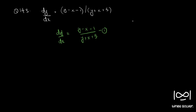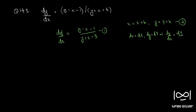The substitution we use here is: small x is equal to capital X plus h, and small y equal to capital Y plus k — let's call this equation 2. Differentiating equation 2 with respect to x, we have dX equal to dx and dY equal to dy, therefore dy by dx equal to dY by dX — call this equation 3.